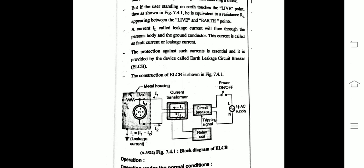A current called leakage current will flow through the person's body and the ground conductor. This current is called a fault current or leakage current. Protection against such current is essential, and it is provided by the device called the Earth Leakage Circuit Breaker.